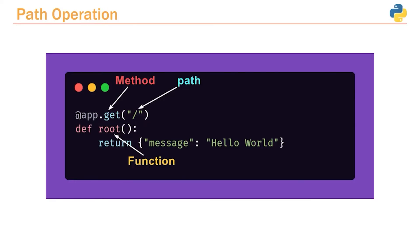Let's quickly recap what we learned. A path operation has a decorator with the at symbol, then we reference our FastAPI instance which we called 'app', then we have our HTTP method — in this case it matches only GET methods — and then the specific path or URL, which is the root URL in this case. Below that, we've got our path operation function containing all the logic for performing some task. Whatever it returns is the data that gets sent back to the user when they hit this specific path operation.